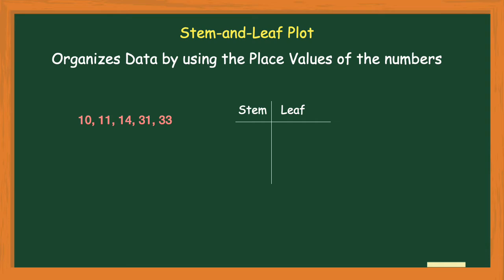The stem and the leaf — all that vertical line is doing is separating your place values. Looking at my numbers, I have 10, 11, and 14, and all three are in the tens, meaning they have a one in the tens place. So my stem in this case is going to represent the tens place and my leaf is going to represent the ones place. Taking the number 10 and drawing a vertical line separating the ones from the tens place, you can see the one is my stem and the zero is my leaf — and that's the same for 11 and 14.